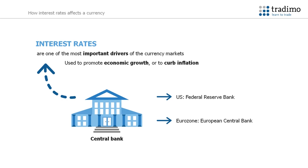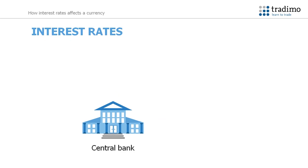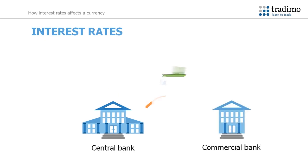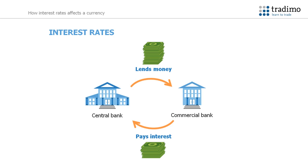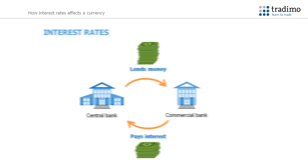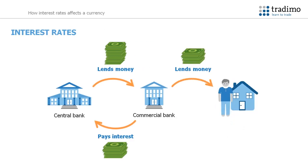The central banks use the interest rates to promote economic growth or to curb inflation. Let's take a look at the mechanisms behind this. The central bank of a country lends money to commercial banks, and the interest rates set by the central bank are what the commercial banks have to pay for borrowing the money. This is referred to as the base interest rate.